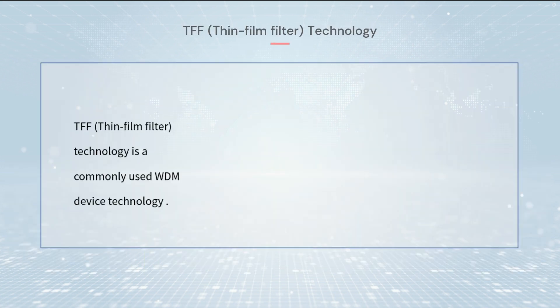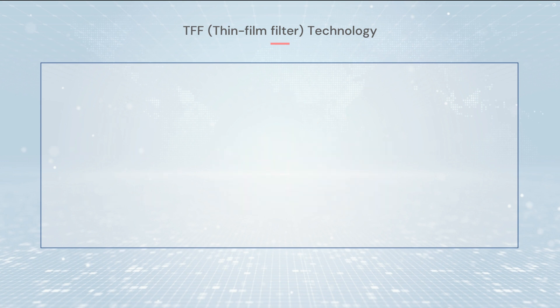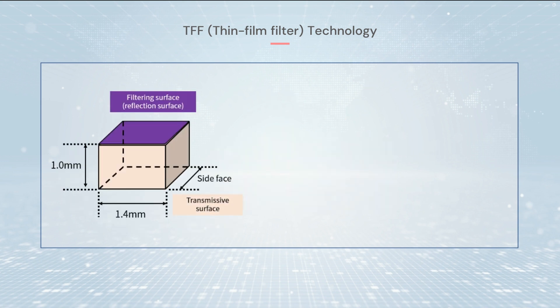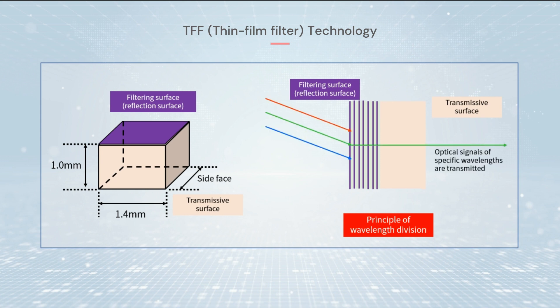TFF technology is a commonly used WDM device technology. It uses the optical properties of special thin film materials to separate or multiplex optical signals of different wavelengths. Thin film filters are usually composed of multiple film layers of different thicknesses with a certain regularity and specific reflectivity, allowing specific wavelengths to reflect in the thin film while other wavelengths pass through, achieving the separation and multiplexing of signals.